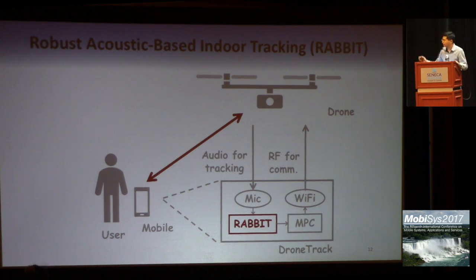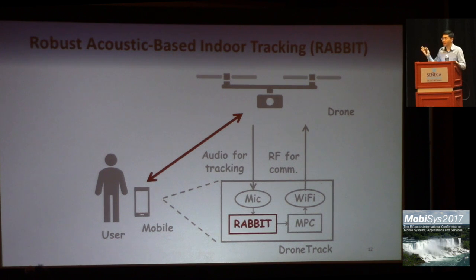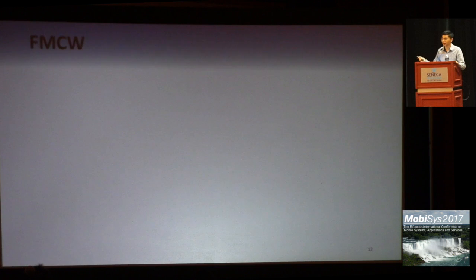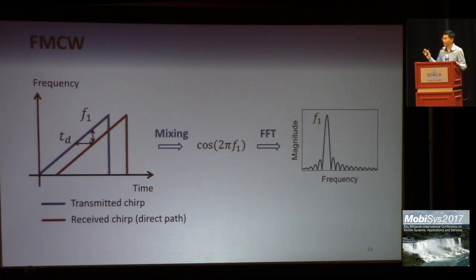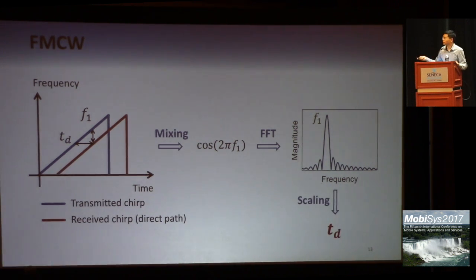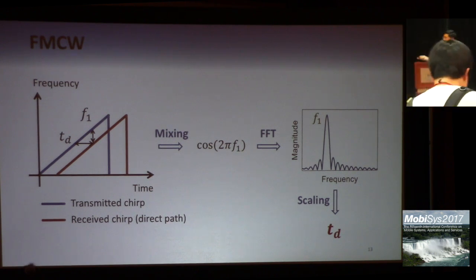I will now explain the tracking part of our system. It is used to estimate the distance between the drone and user. One effective approach for distance estimation is FMCW. In FMCW, the sender transmits a chirp signal whose frequency linearly sweeps over time. The receiver mixes the received signals with the transmitted ones, and the result signal is a cosine whose frequency is equal to F1, as shown in the figure. To determine F1, we can apply FFT on the mixed signals and find the peak in the spectrum. It can be shown that the propagation delay and propagation distance are proportional to F1.